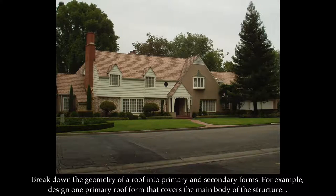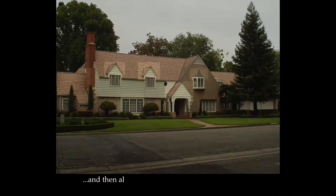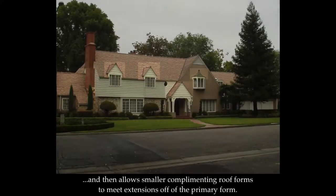Break down the geometry of a roof into primary and secondary forms. For example, design one primary roof form that covers the main body of the structure and then allows smaller complementing roof forms to meet extensions off of the primary form.